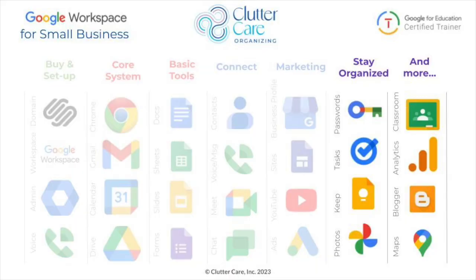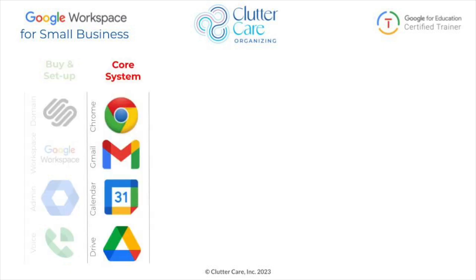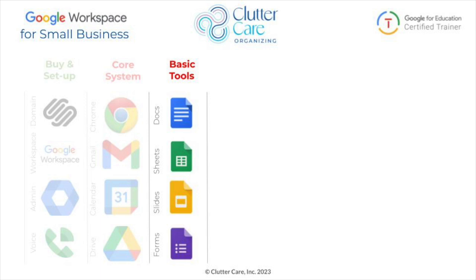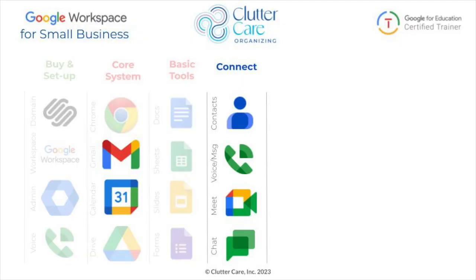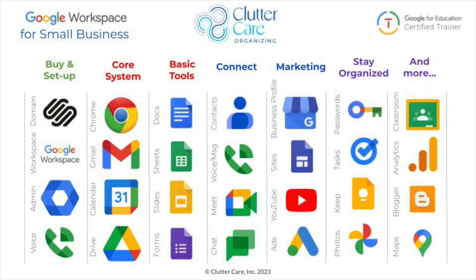You also get all these other Google apps that help keep you organized — we'll talk about those in another video. First, we need to buy and set up your system, then set up your core Google apps — Chrome, Gmail, Calendar, and Drive — customized to your business. You need to know how to use the basic tools: Docs, Sheets, Slides, and Forms. Then we can start reaching out to contacts using various methods and marketing your business so you can be found and succeed. All of these things come with your Google Workspace account.